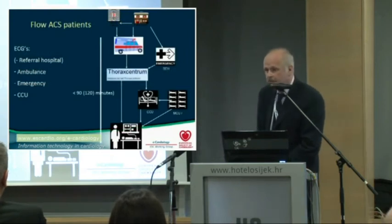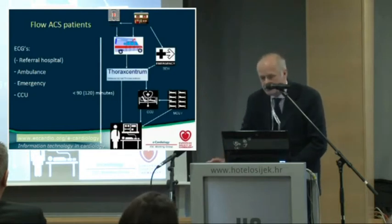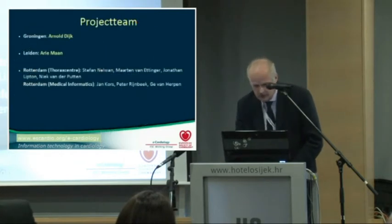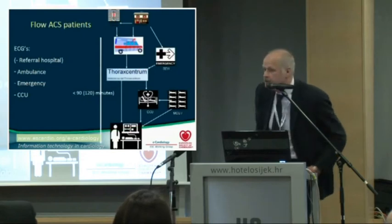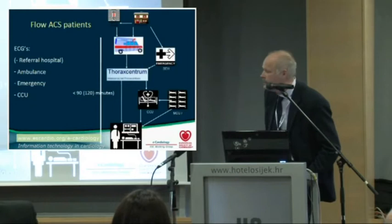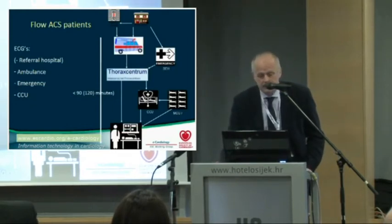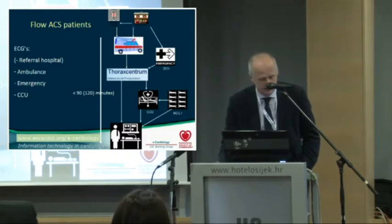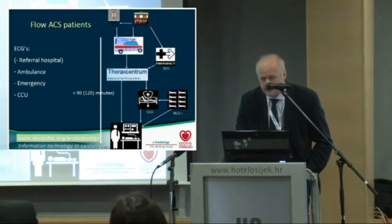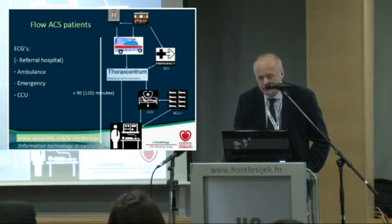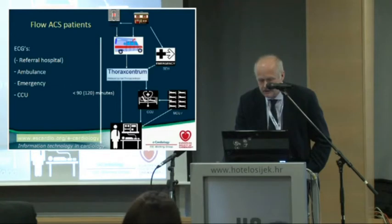A patient with symptoms of acute myocardial infarction may be sent to a hospital for medication therapy or to a primary PCI hospital for primary angioplasty. The discrimination between those two therapies is made with support of the ECG. The guidelines indicate that patients with high ST elevations must be sent to a primary PCI center, and all other patients to another hospital for medication or thrombolysis therapy. ECGs may be made in the ambulance, at an emergency room, or at a coronary care unit.